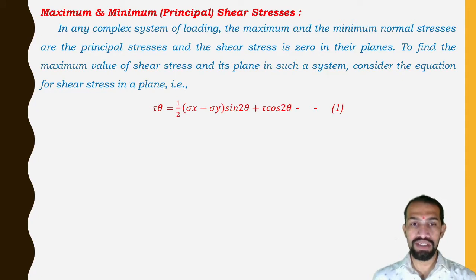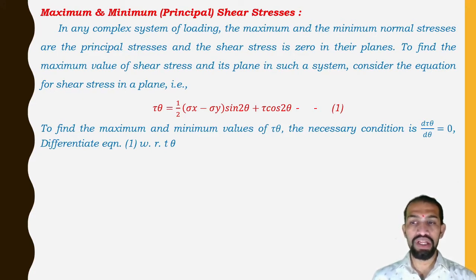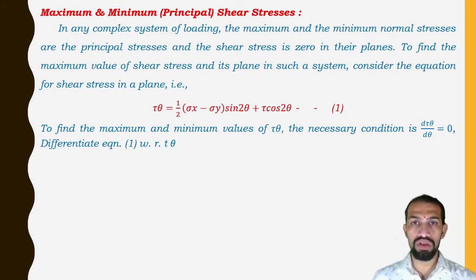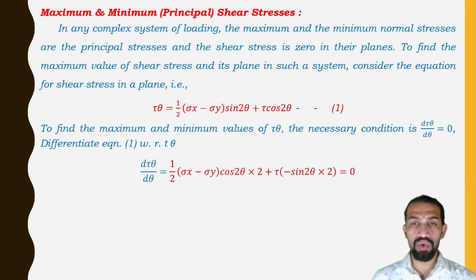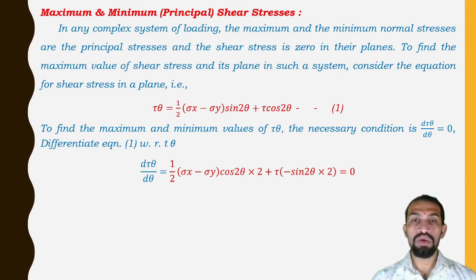To find the maximum and minimum values of τ_θ, the necessary condition is differentiation of the equation with respect to θ, that is dτ_θ/dθ = 0. Differentiating equation number 1 with respect to θ, we get dτ_θ/dθ = (1/2)(σ_x − σ_y) cos 2θ · 2 − τ sin 2θ · 2 = 0.